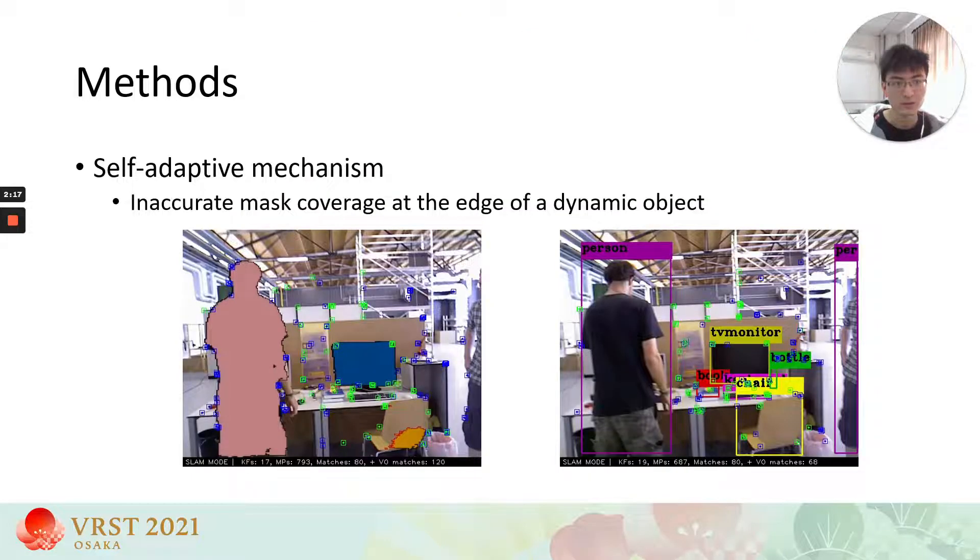Most real-time segmentation methods have the problem of inaccurate mask coverage at the edge of a dynamic object. To overcome this shortcoming, the bounding box provided by object detection algorithm contains almost all edges and feature points of a dynamic object.